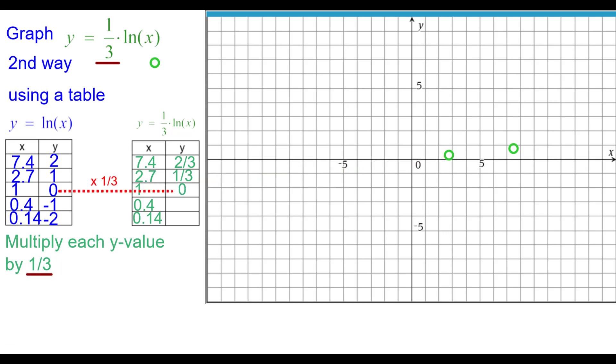Zero times a third is zero, so one comma zero. Negative one times a third is negative one-third, so 0.4 negative one-third. And negative two times a third is negative two-thirds, 0.14 comma negative two-thirds.